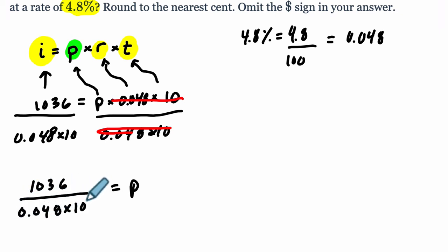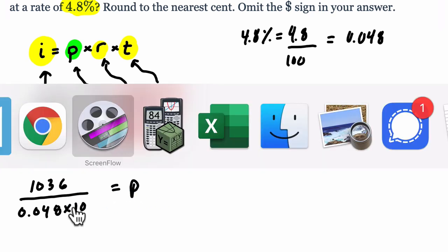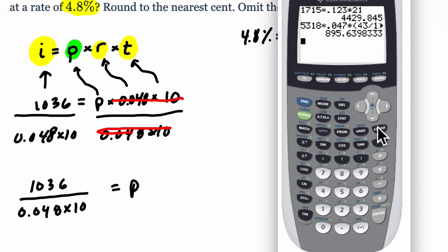Now, to solve this, be careful. On the calculator here, let me clear this off, we have 1,036 divided by, make sure you put this product in parentheses, because otherwise you would just be dividing by 0.048 and then multiplying that whole ratio by 10. In other words, it will give you a different answer.